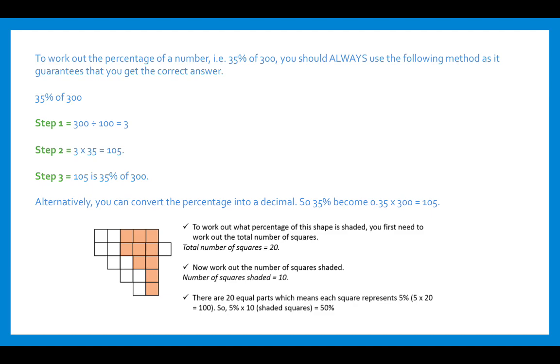Alternatively, you can convert the percentage into a decimal — so 35% becomes 0.35 — and then multiply that by 300 to get the answer of 105.